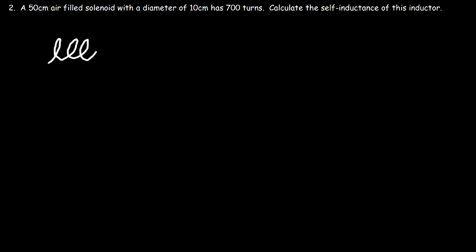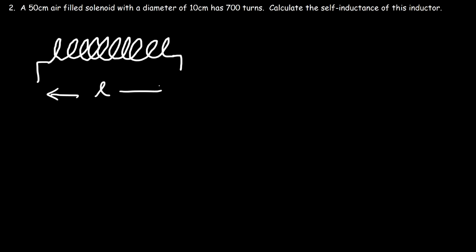A 50 centimeter air-filled solenoid with a diameter of 10 centimeters has 700 turns. Calculate the self-inductance of this inductor. A solenoid is basically a bunch of coils of wire combined together. This is the length of the solenoid, and this represents the diameter. Let's calculate the area of the coil.